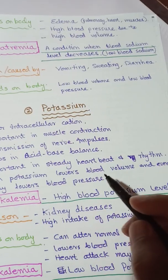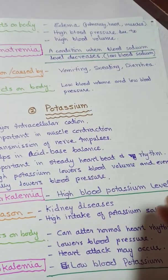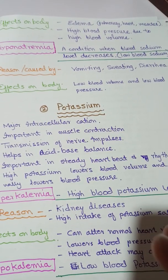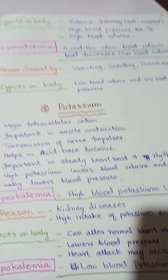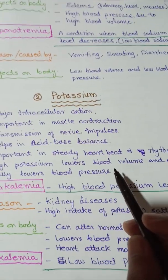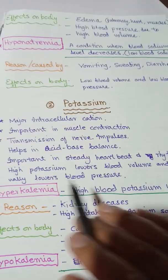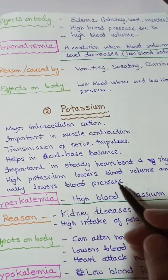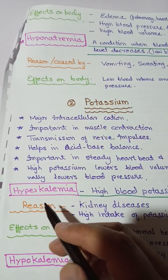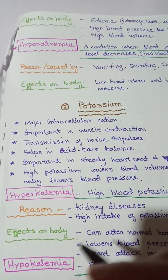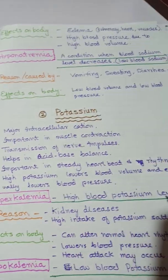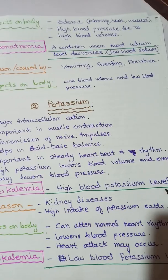As we know high sodium level increases blood volume and increases blood pressure, whereas if potassium level increases inside our body it lowers blood volume because potassium is intracellular. It causes osmotic pressure inside the cell, causing water intake inside the cell, and blood volume decreases, resulting in lower blood pressure. If potassium level increases it is called hyperkalemia.